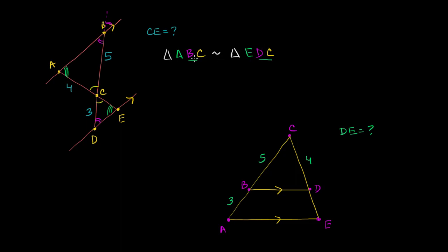If this similarity is true, then BC corresponds to DC. So we know that the length of BC over DC is going to be equal to CA over CE — because we want to figure out what CE is, and we're using BC and DC because we know those values. CA over CE are the corresponding sides.